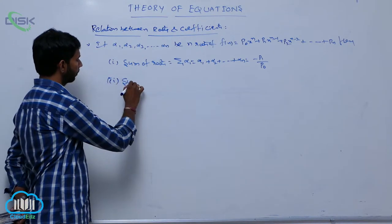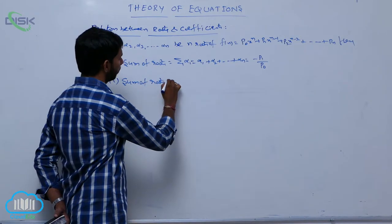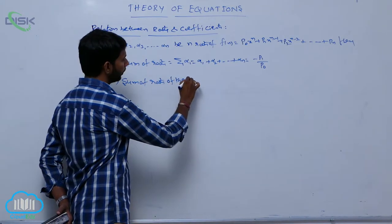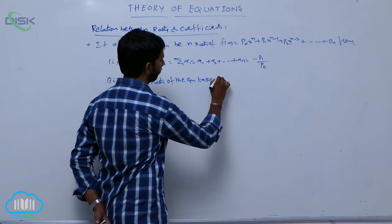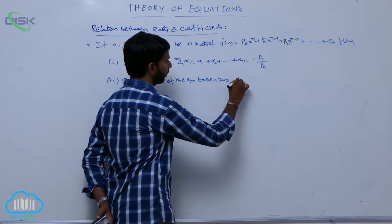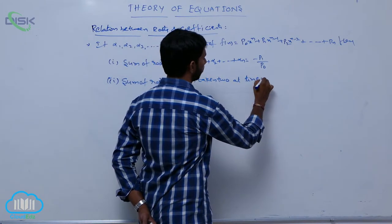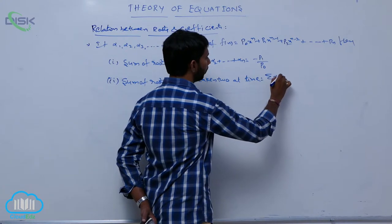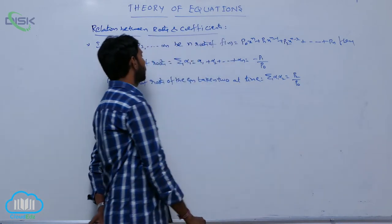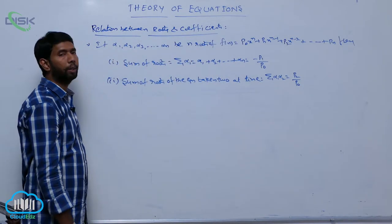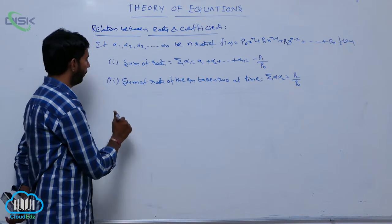Next, the sum of roots of the equation taken two at a time is equal to sigma alpha 1 alpha 2, which is equal to p2 by p0.